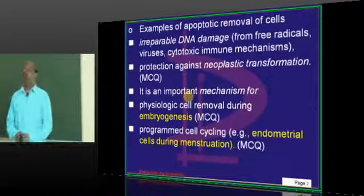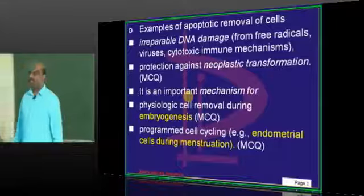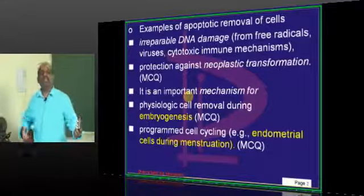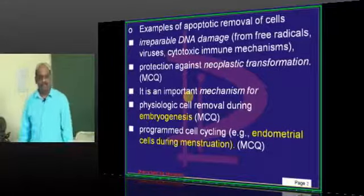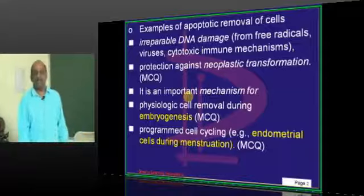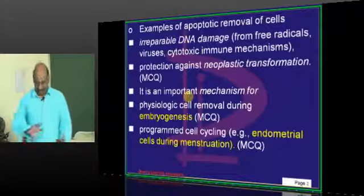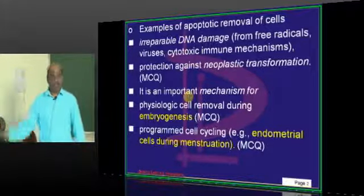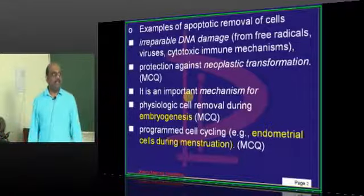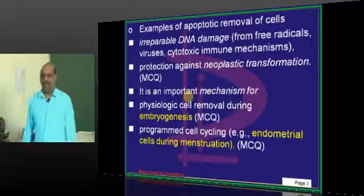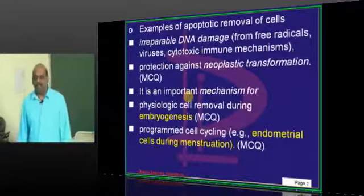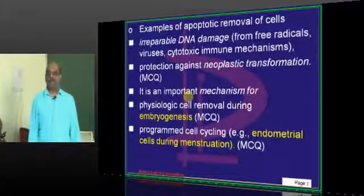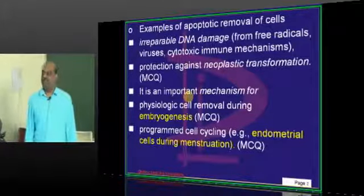Similarly, during embryogenesis, we all start life as a solid mass in the mother's womb. Then there is canalization in our body — that is how, with one central gut and one spinal cord with a few bones, we develop. Physiological removal during embryogenesis is also an example of apoptosis.